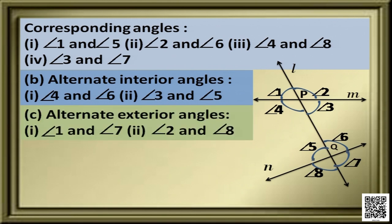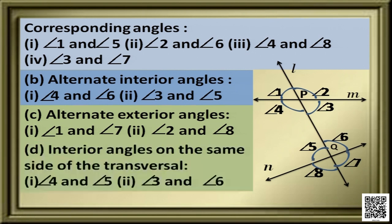Similarly, we also have alternate exterior angles. Angle 1 and angle 7 are alternate exterior angles, and angle 2 and angle 8 are alternate exterior angles. Then come the interior angles on the same side of the transversal. If we consider the right side, then the interior angles on the right side are 3 and 6, so 3 and 6 are a pair of interior angles on the same side of the transversal. Similarly, angle 4 and angle 5 are also interior angles on the same side of the transversal.